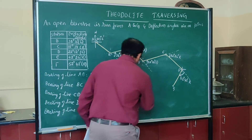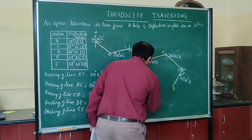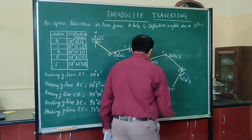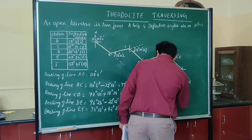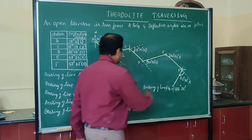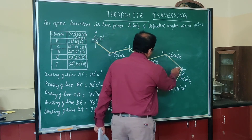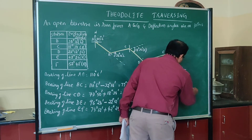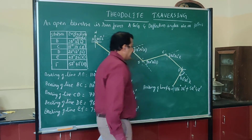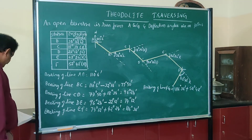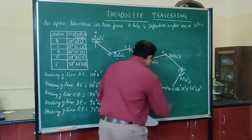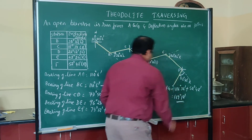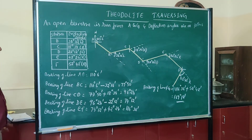Bearing of line FG equals the previous bearing of line EF, 116 degrees 36 minutes, plus the deflection angle at F of 52 degrees 42 minutes, since it is to the right. The bearing of line FG is therefore 169 degrees 18 minutes.